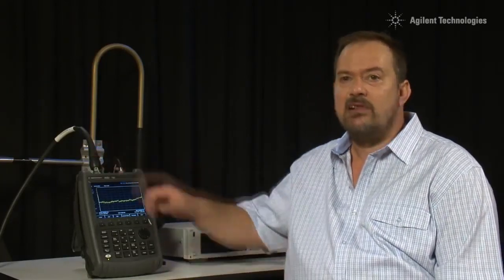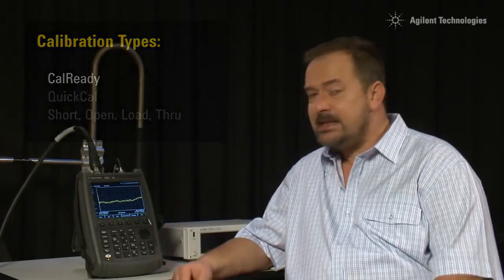And better still, every FieldFox is factory calibrated at the RF out connector across its entire frequency range. This CalReady condition means we can start using the FieldFox immediately we arrive on site. Let's start with a very practical example. We have received a priority call out to a repeater site and quickly need to confirm that the antenna and cable are working correctly. This is where CalReady is invaluable. We just disconnect the cable from the transmitter at the bottom of the mast and connect it directly to the FieldFox.